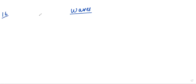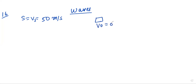We were studying about waves, numerical based. Question 16 says: a source of sound S is moving with a velocity of 50 meters per second towards a stationary observer. The observer's velocity v_o is 0. The observer measures the frequency of the source as 1000 hertz.